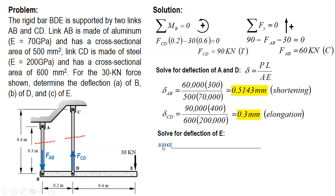This is 0.5143. While CD, with the distance of 0.2 from B, elongation. Since it's tensile, the link CD will stretch. So D will move downward by a distance of 0.3.